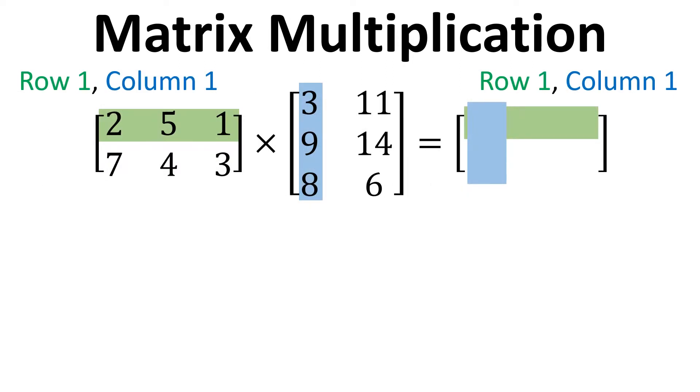So let's go back to our example and go through this step by step. So the first element we're going to calculate in our answer matrix is for row 1, column 1. So that means that we need row 1 from the first matrix and column 1 from the second matrix. And then we're going to multiply the elements together. So the first element in the row is 2 from matrix 1 and the first element in the column from this second matrix is 3. So you multiply those together.